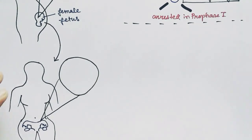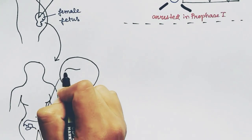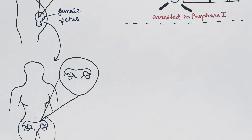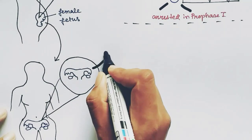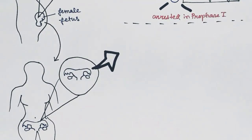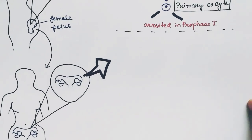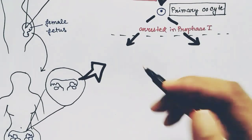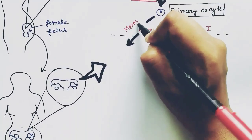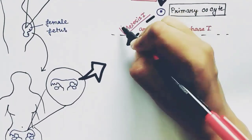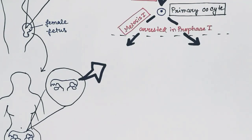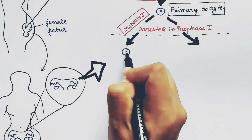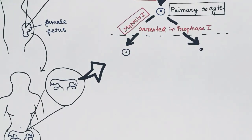When it reaches puberty, inside the ovary of the female, the cell which got arrested in prophase one — the primary oocyte — starts dividing again and completes meiosis one, forming the secondary oocyte and one first polar body.